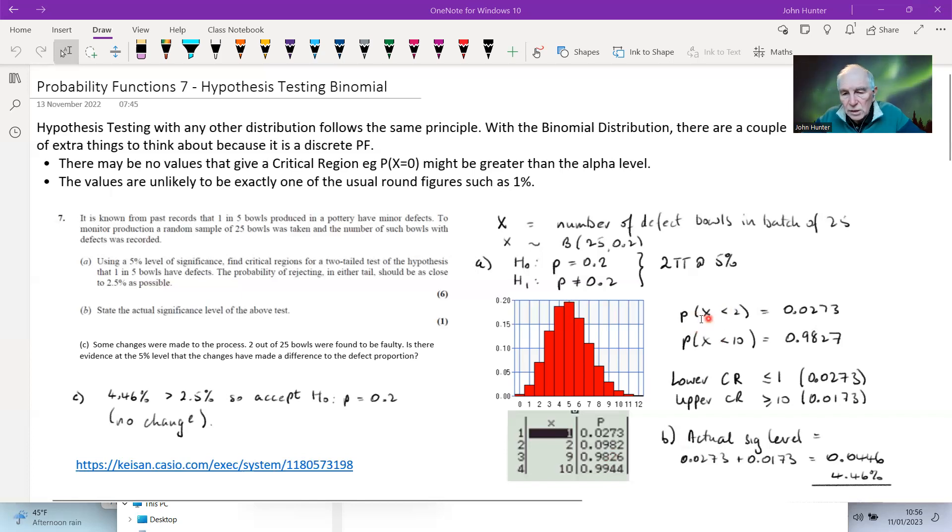But needless to say, that's going to give us probability that x is less than 2 is 0.0273, and that it's less than 10, it's going to be 0.9827. But what we're interested in is 1 minus that number. So our lower critical region is less than or equal to 1, which is the probability of 0.0273, and the upper is greater than or equal to 10, with probability of 0.0173, which is the 1 minus that. So those are our critical regions. And the actual significance level is the sum of these two, so total size of your two tails added together, which is 4.46%. So that would be the actual significance level of your test.